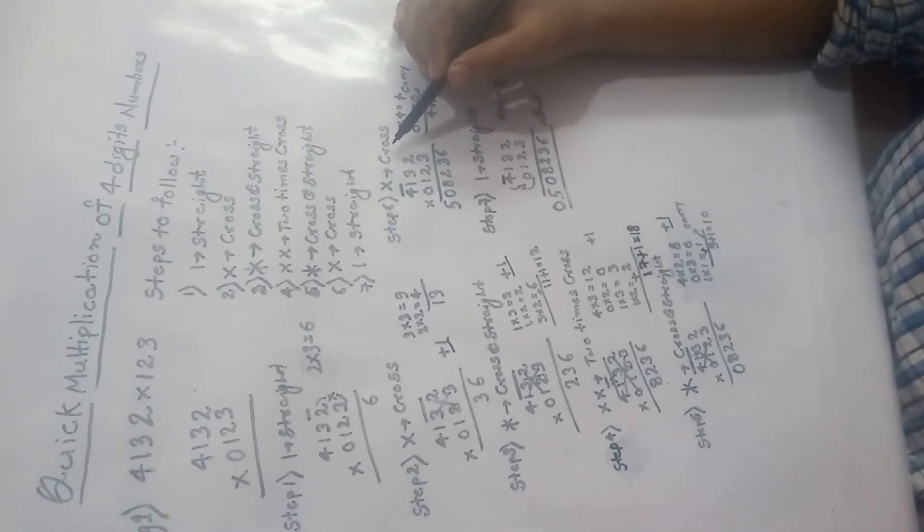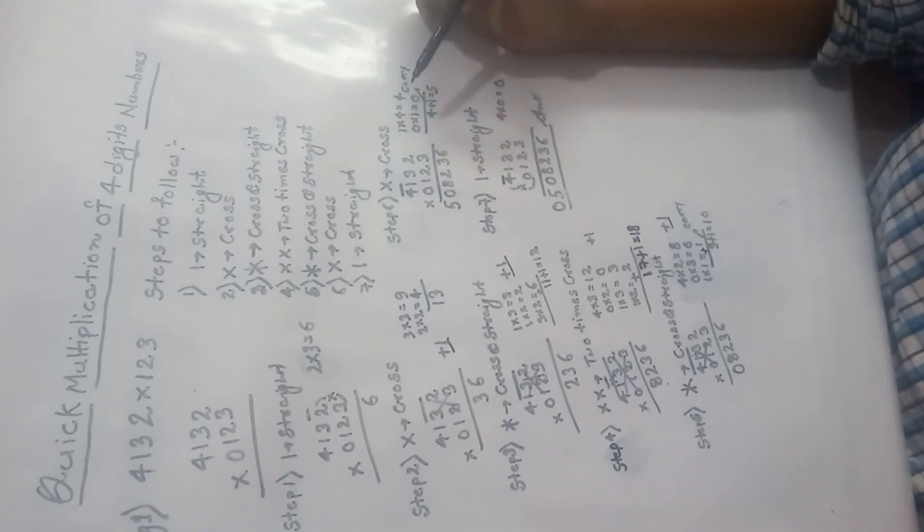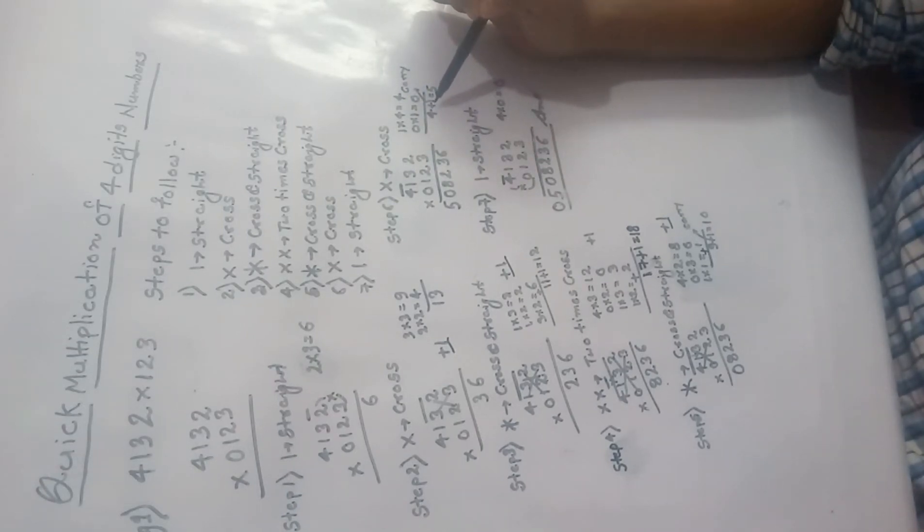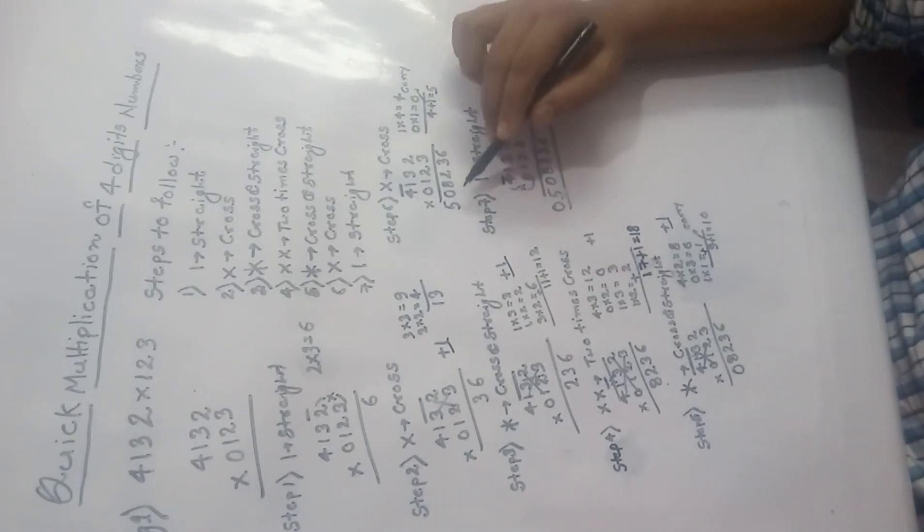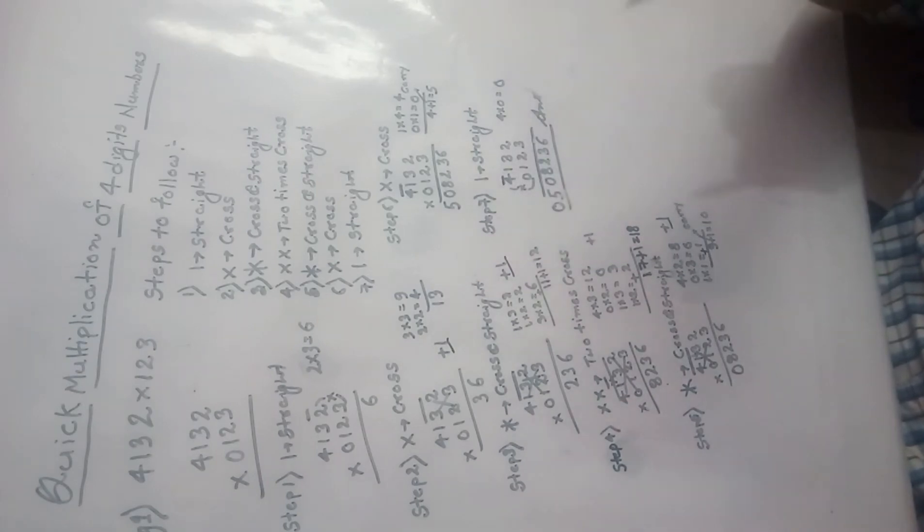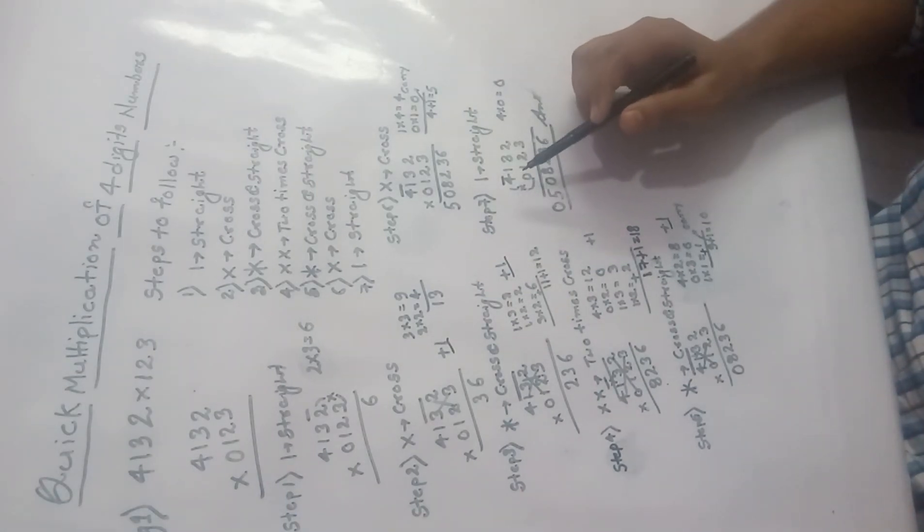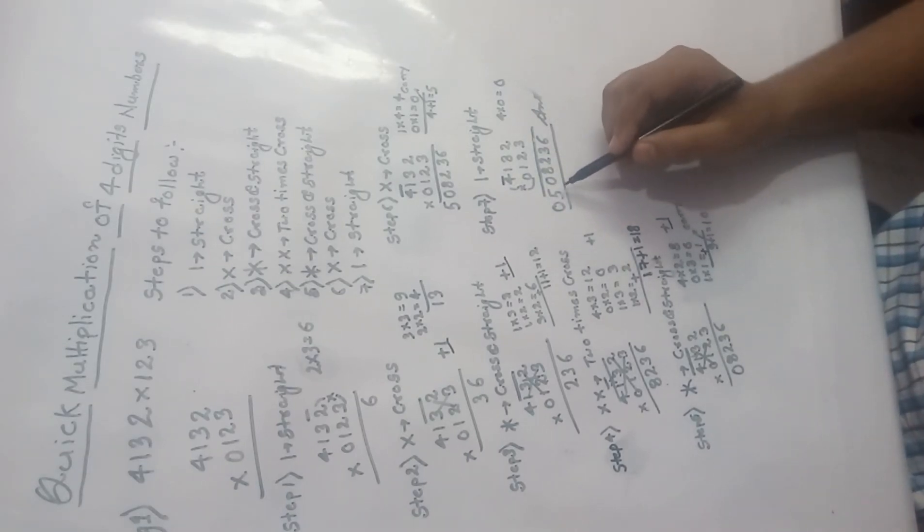Now cross multiplication, so cross multiplication is 4 into 1 is 4, 0 into 1 is 0, so 4 plus 1 is carry, which is from step 5, so 4 plus 1 is 5. And the last step is straight multiplication, so straight multiplication is applied between 4 and 0, so 4 into 0 is 0. So the answer is 5, 0.